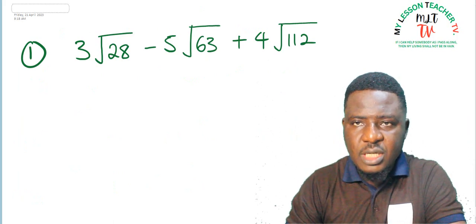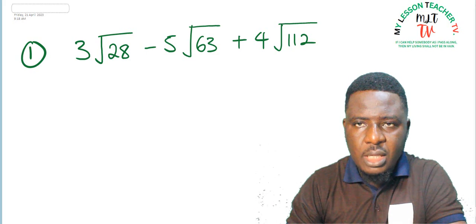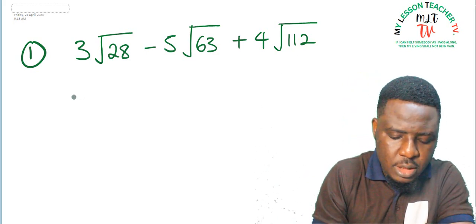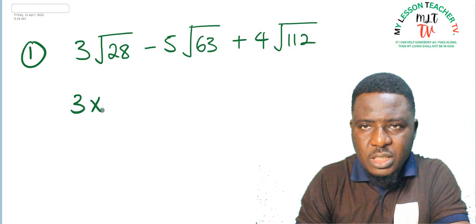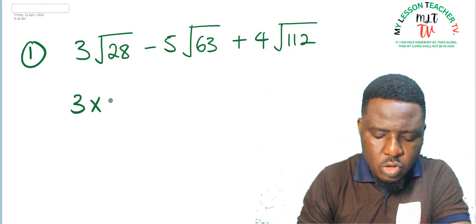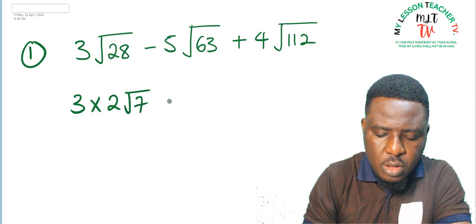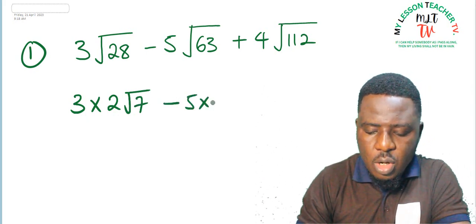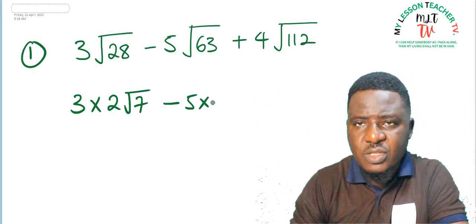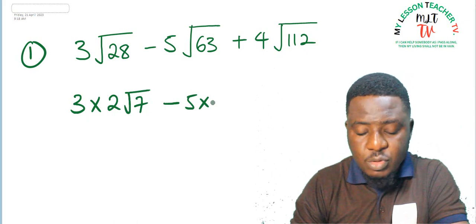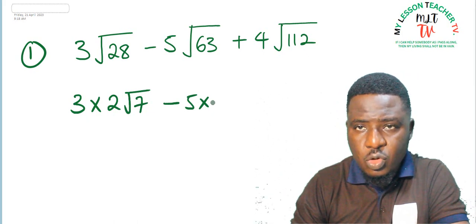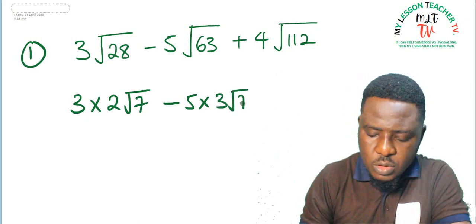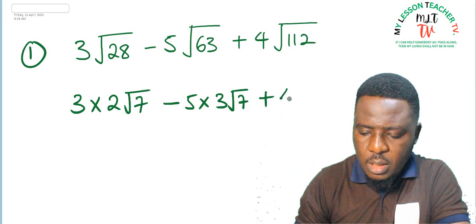Just like we did in the previous class, you have to express them in their basic surd forms and then collect like terms. When you express root 28, it becomes root 4 times 7. Since 4 is a perfect square and square root of 4 is 2, that gives us 2 root 7. Then 5 times root 63: express 63 as 7 times 9. Root 9 is 3, so this becomes 3 root 7.